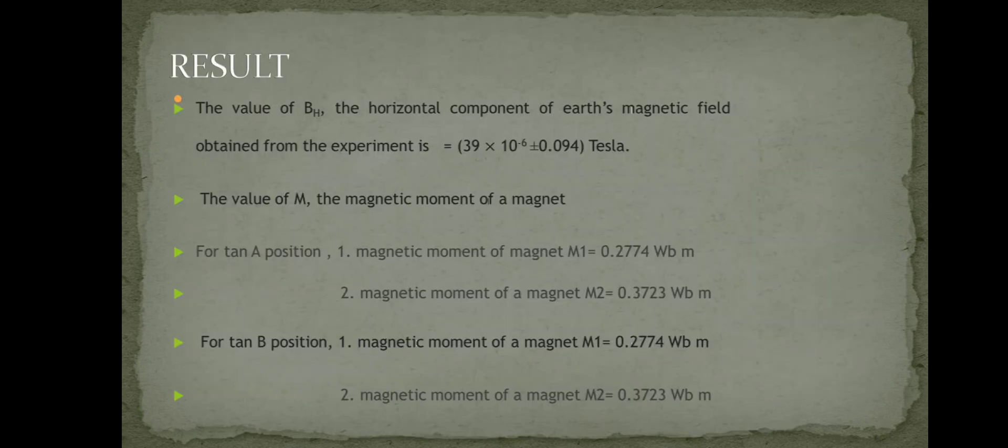Result. The value of the horizontal component of Earth's magnetic field obtained from the experiment is 3 times 10 to the power minus 6 plus or minus 0.094 tesla. The value of M, the magnetic moment of the magnet.